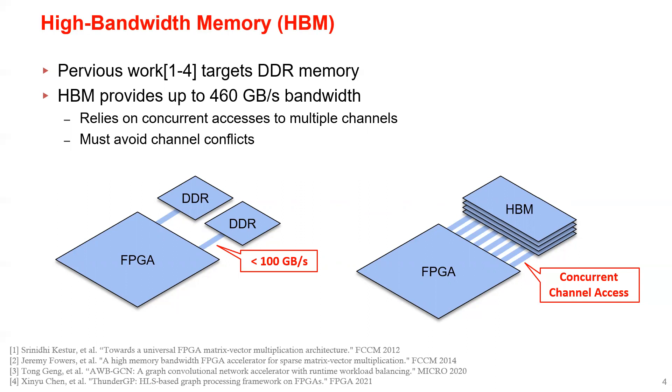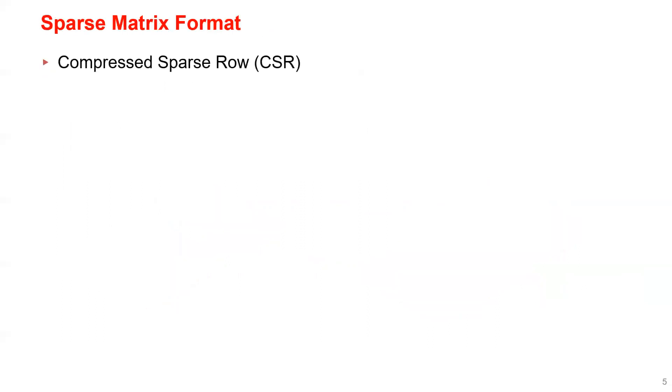Our solution is to co-design the matrix format and the accelerator architecture. For the matrix format, there is a commonly used one called compressed sparse rows, or CSR for short. Unfortunately, CSR is not suitable for HBM acceleration.